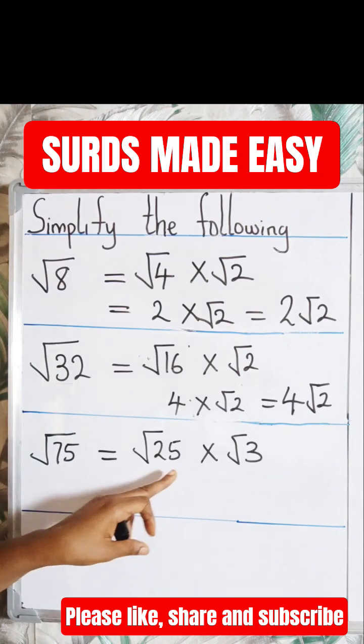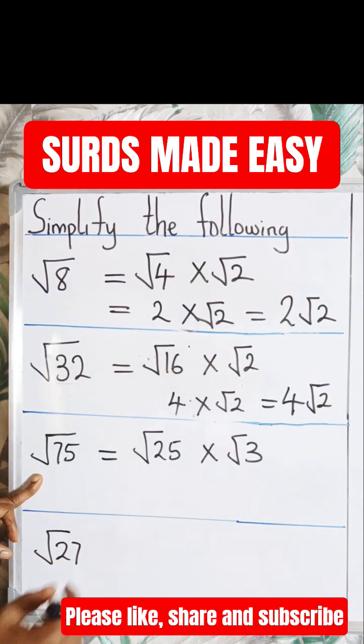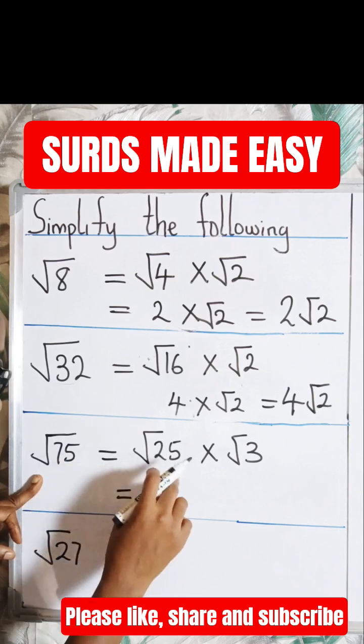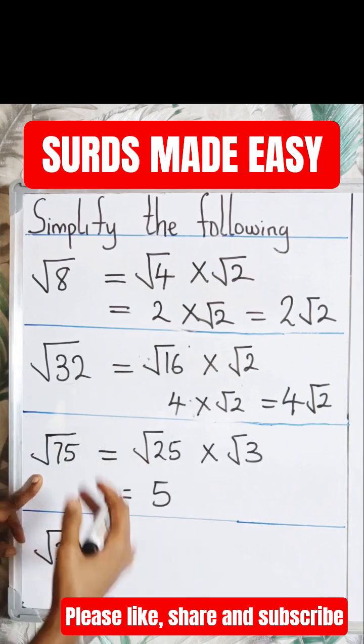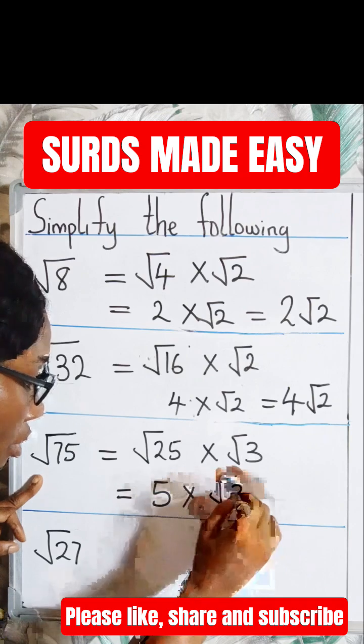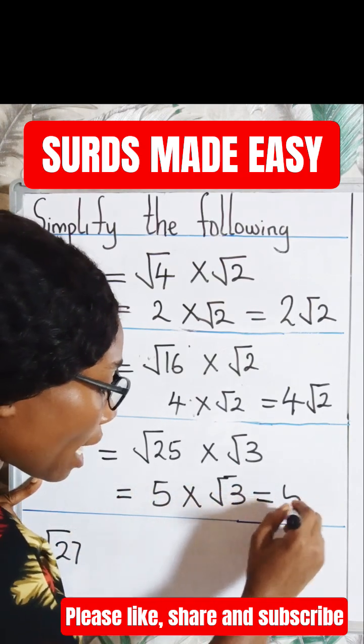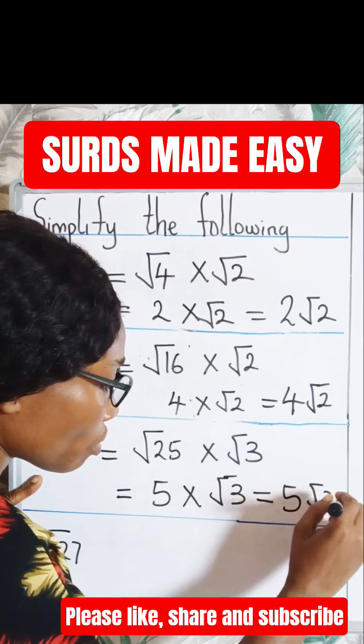So this is equal to root 25 is 5, because 5 times 5 is 25, times root 3. So 5 times root 3 is equal to 5 root 3.